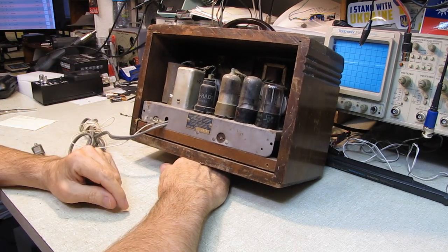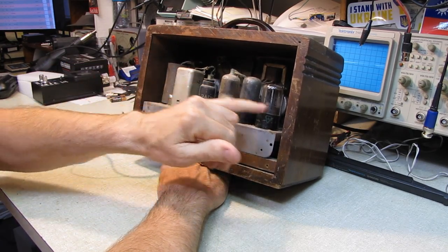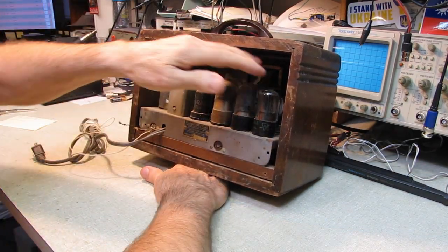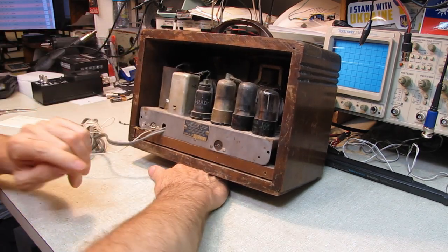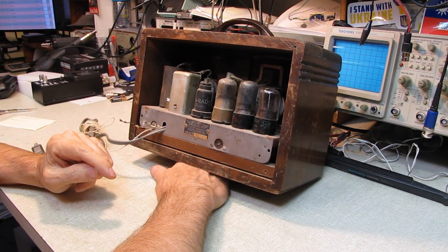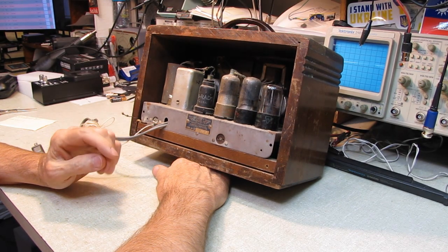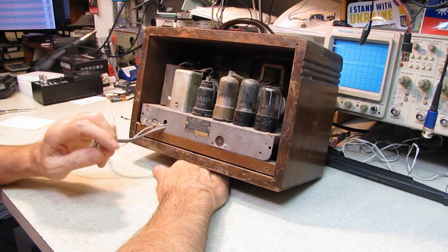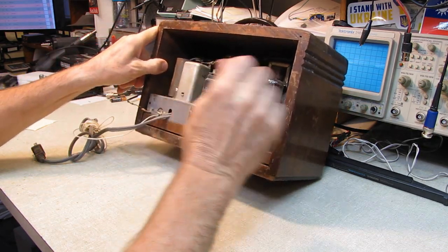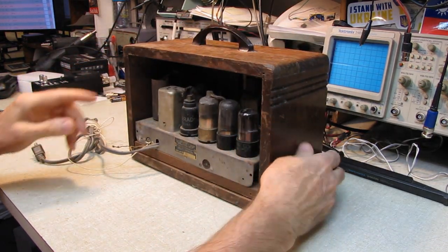It looked like an All-American 5, 1, 2, 3, 4, 5, but there's another tube socket hidden in the back in there. So I'm going to have to find out what that's all about. I don't know. Well, we'll get it out of the chassis and we'll take a closer look at what we've got here. I haven't had this out yet.